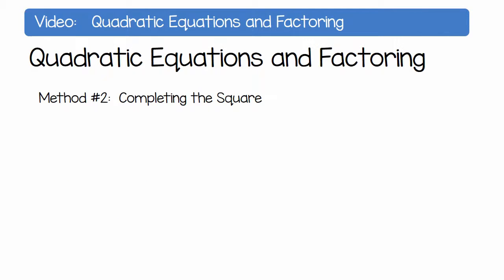Let's now look at method 2, completing the square. Here is an example: y equals x squared plus 6x plus 9.